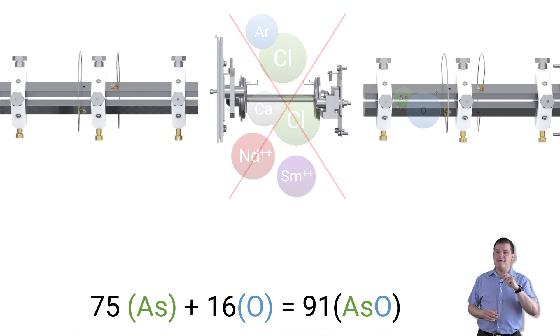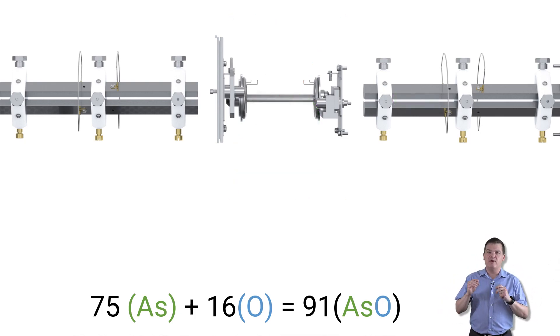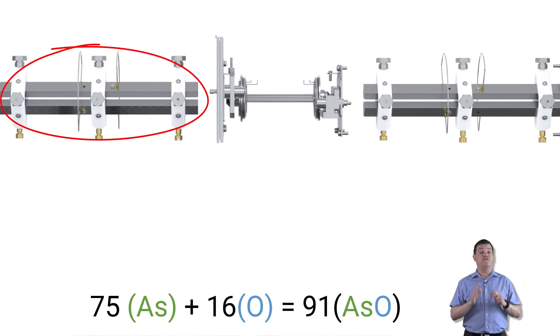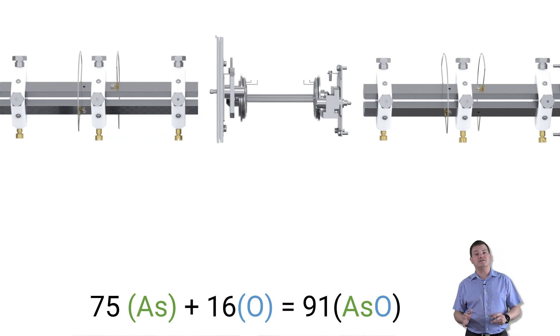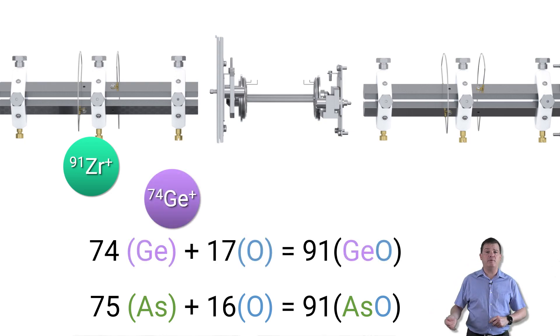The method only works with MSMS though because we need the extra mass filter before the cell to remove any other ions that could overlap with the arsenic product ions such as zirconium at mass 91. And MSMS will also remove any other ions that might react with the oxygen cell gas to form a product ion at mass 91. So for example, germanium 74 plus oxygen 17 would overlap arsenic oxide at mass 91 if we didn't use MSMS.